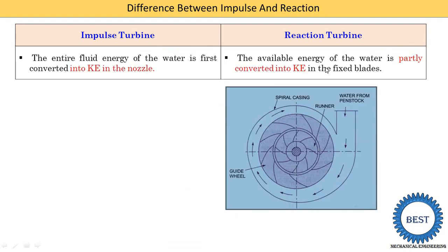In a reaction turbine, the available energy of the water is only partially converted into kinetic energy in a fixed blade. Water coming from the penstock goes to the guide wheel, which is known as the fixed blade. In the fixed blade, water is only partially converted into kinetic energy — its complete conversion of pressure into kinetic energy is not done. In an impulse turbine the full pressure energy is completely converted into kinetic energy in the nozzle, whereas in a reaction turbine we use a fixed blade, also known as the guide wheel.